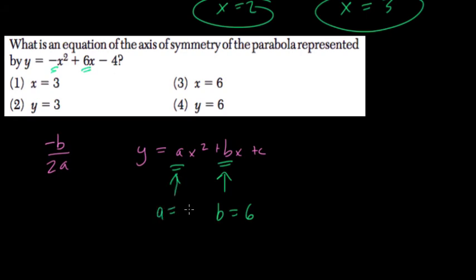So that means negative b over 2a, that's negative 6 over 2 times negative 1, or negative 6 over negative 2, which is positive 3, and it's x equals 3.